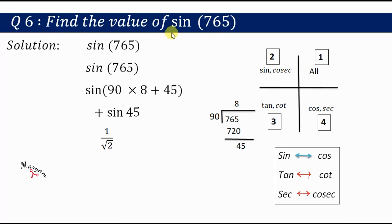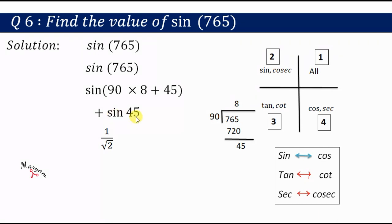Question 6: find the value of sin 765°. We divide 765 by 90: 90 × 8 = 720, remainder 45. So 765 = 90 × 8 + 45. This is the 8th quadrant; adding something takes us to the 9th quadrant. In the 9th quadrant all trigonometric functions are positive. Since 8 is even, sine remains sine. Therefore sin 765° = +sin 45° = 1/√2.